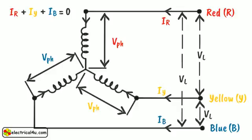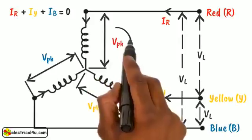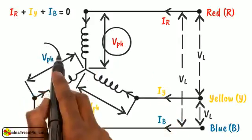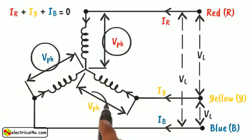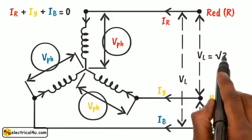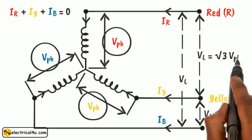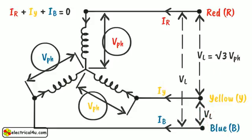In star connection, the line voltage that is voltage between two line terminals of star-connected system is root three times of phase voltage. Phase voltage is the voltage across the individual winding. That means phase voltage is the voltage between one phase and the neutral point. Therefore, VL equals root three VPH.